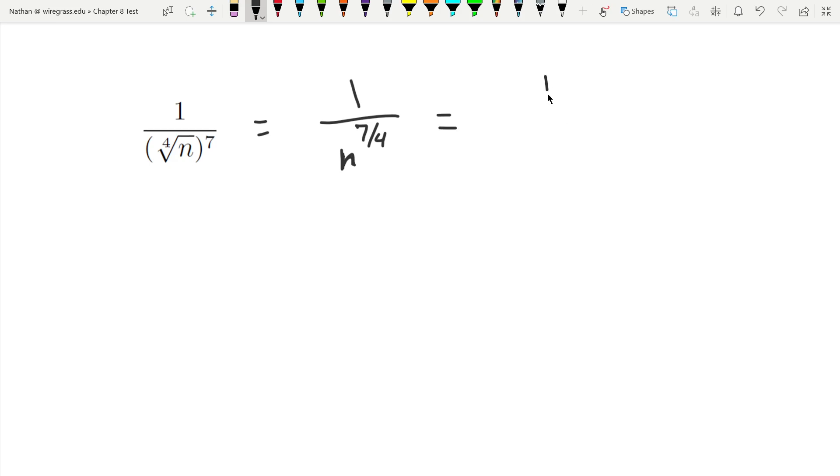If I do that, what I'm going to end up getting is n, well, let's write this as a mixed number, so this is going to be the same thing as 1 plus 3 fourths.